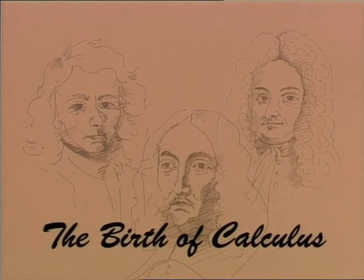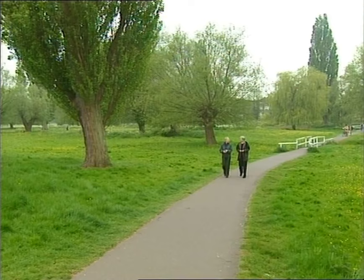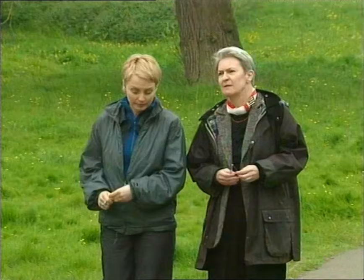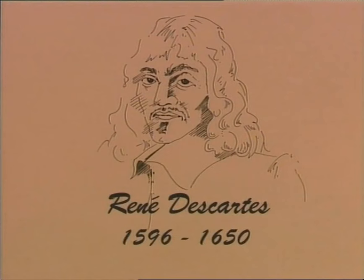Our story starts in the early 17th century, when France was the centre of the mathematical world. Jeanne Pfeiffer is an historian from the centre of Alexandre Coiré in Paris. We have first René Descartes, who was an important mathematician and philosopher, who was trained by the Jesuits in La Fleche. He had a private income, so he could travel around Europe. And from 1628 on, he settled in Holland, where he invented analytic geometry.